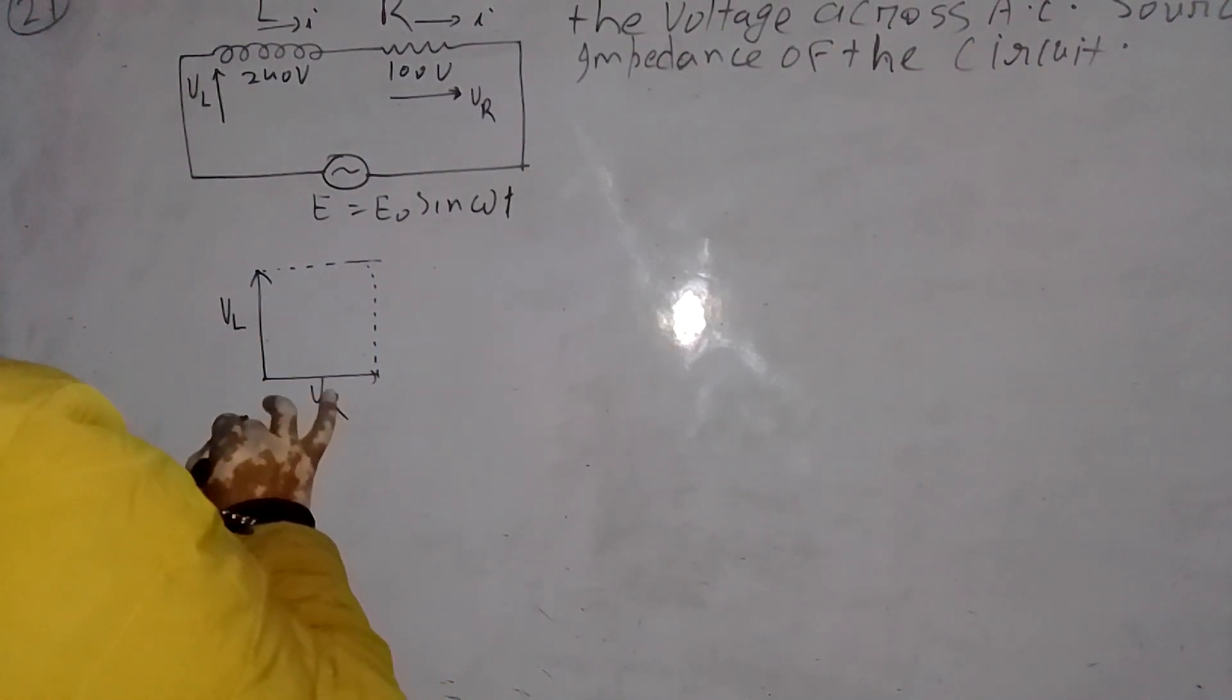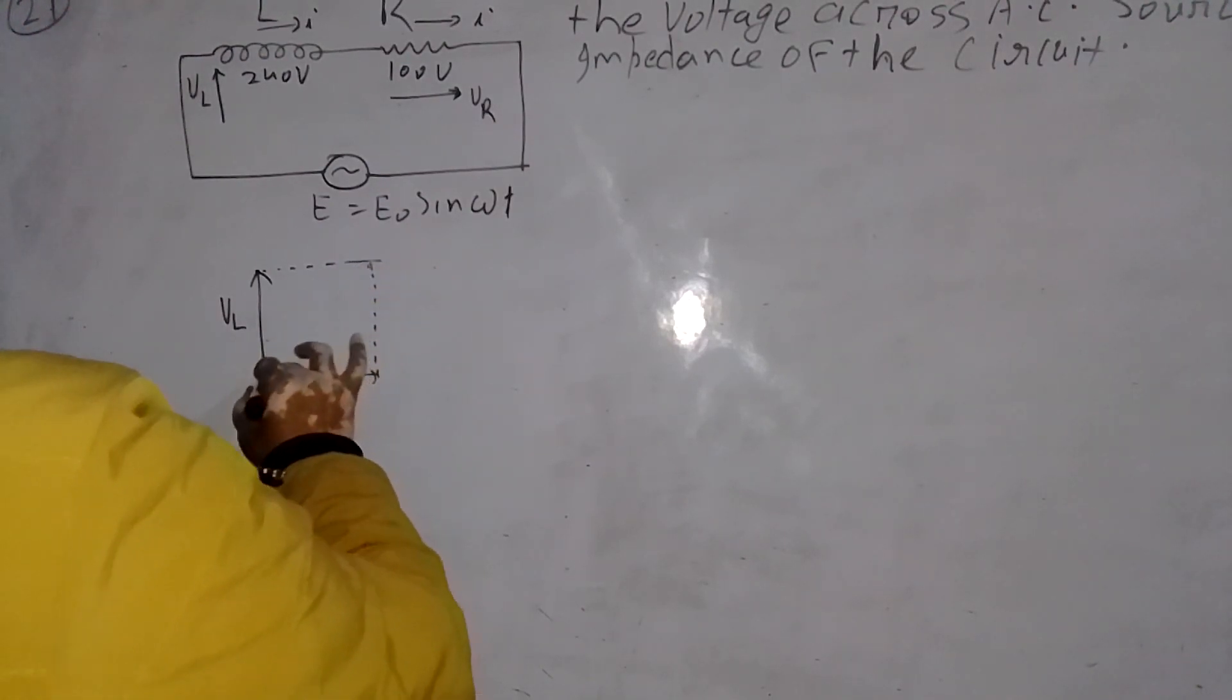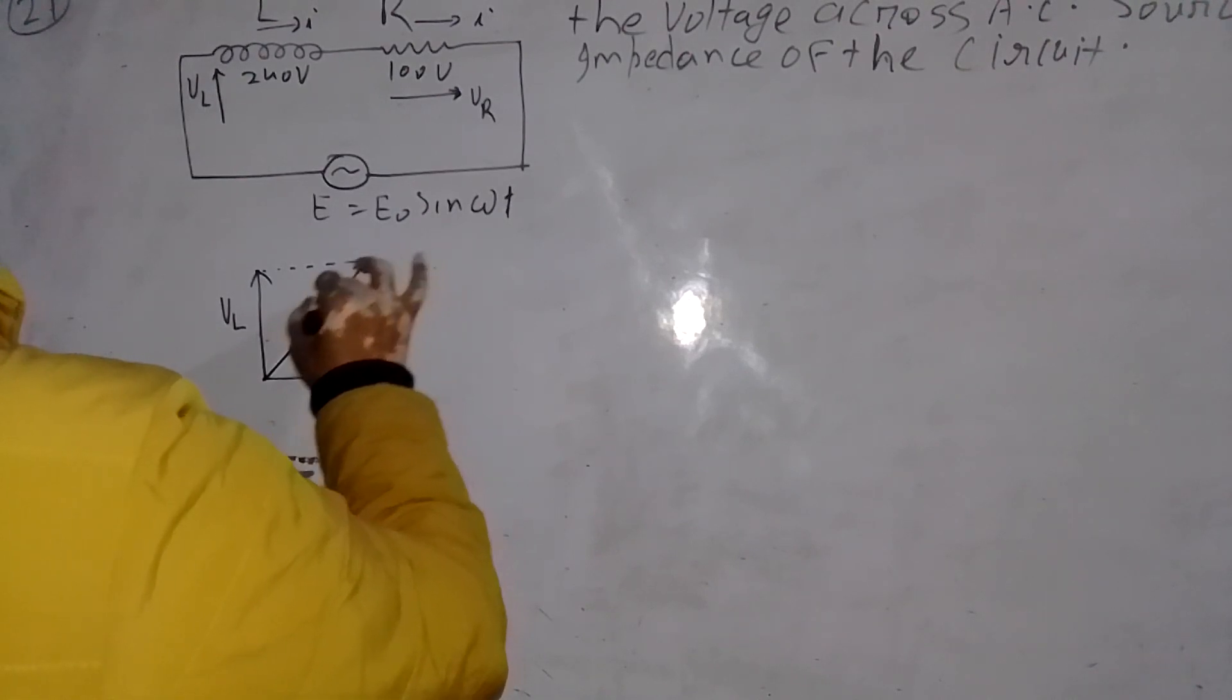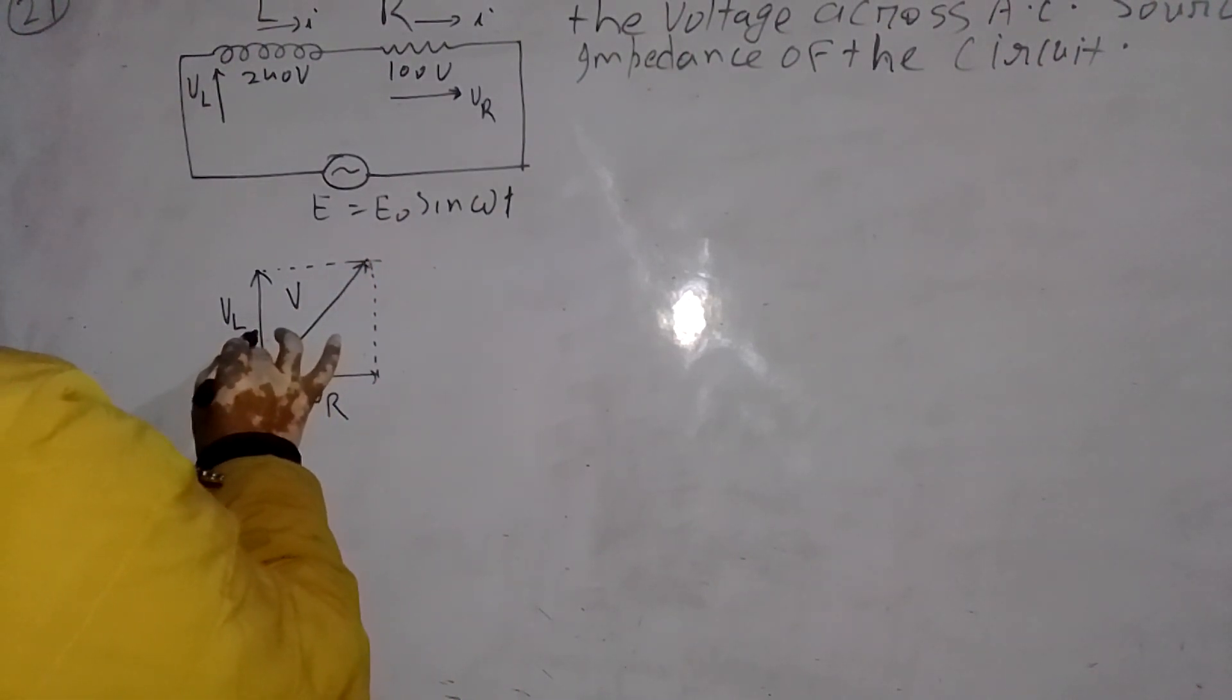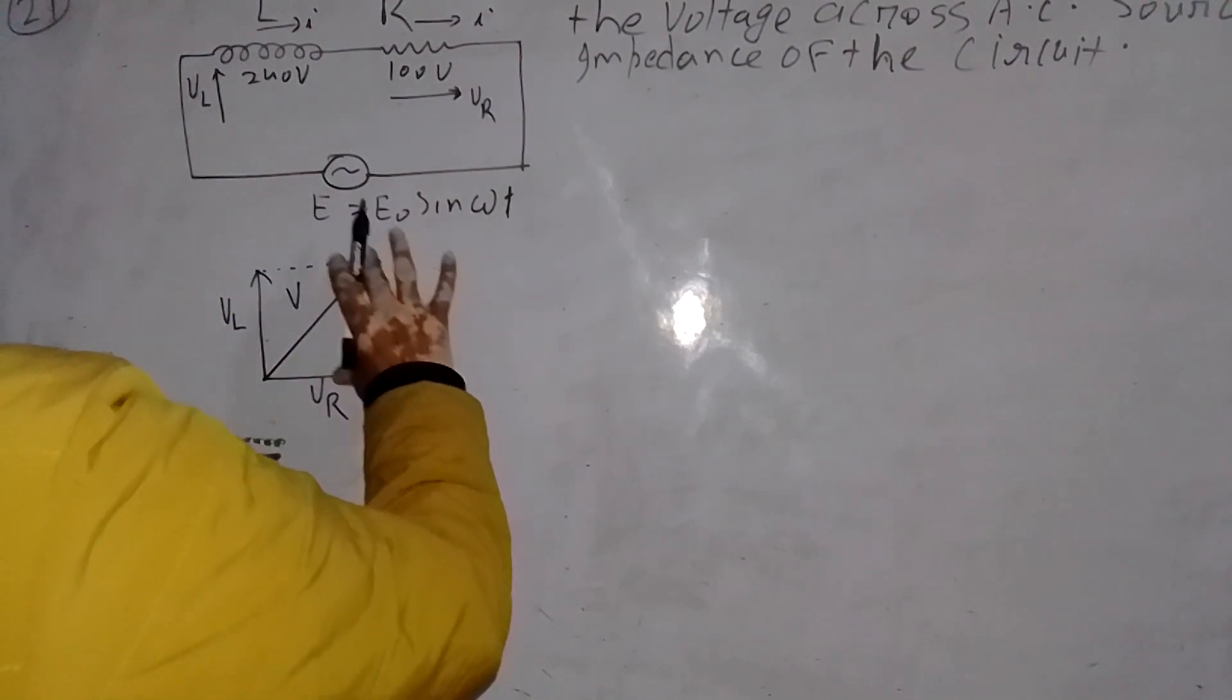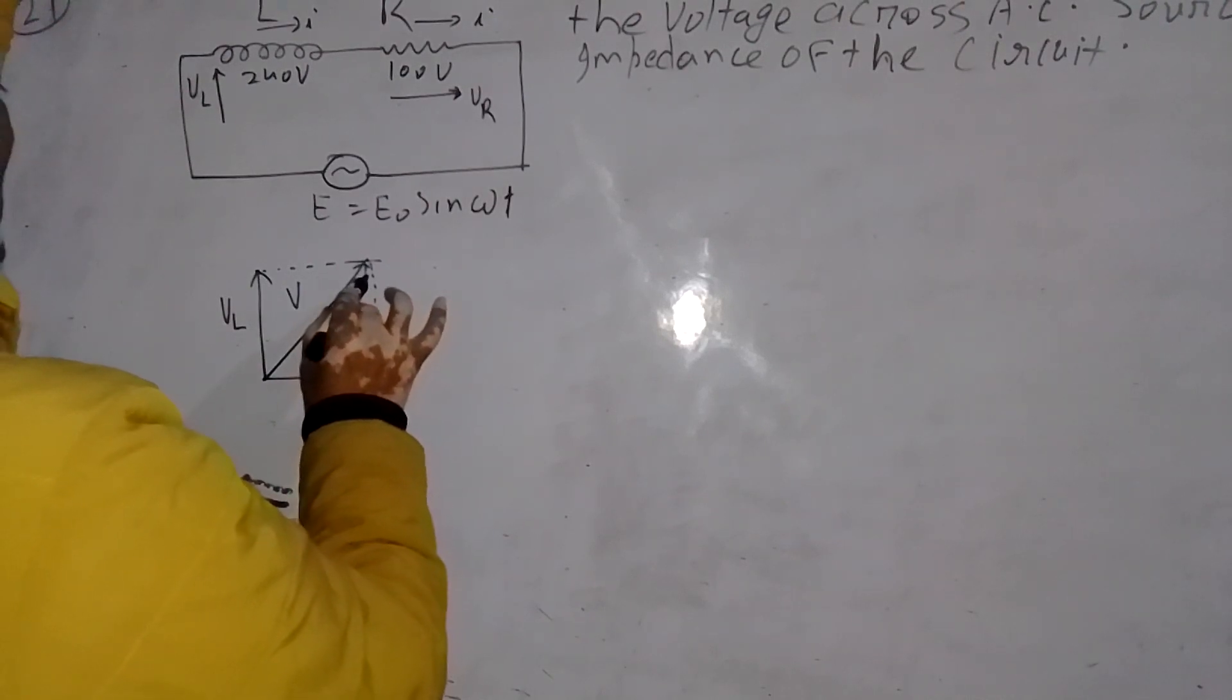If the parallelogram is complete, this line and this line are equal in magnitude, so this vector can be transferred over to become VL.